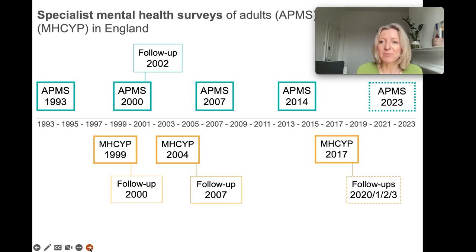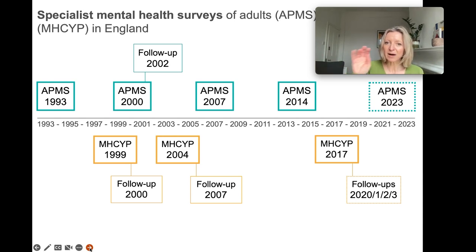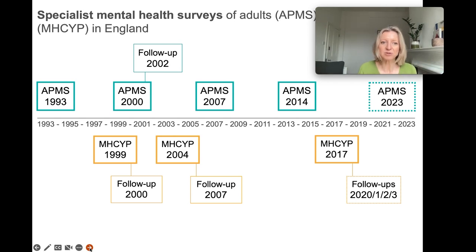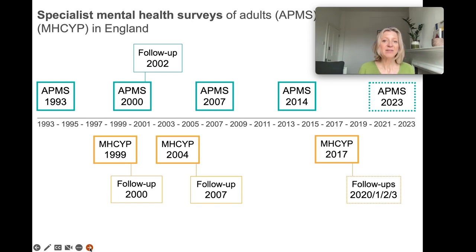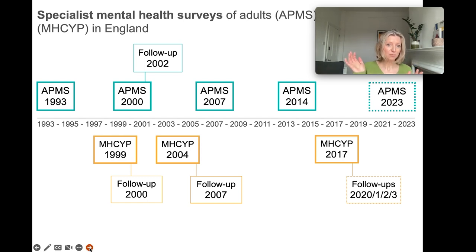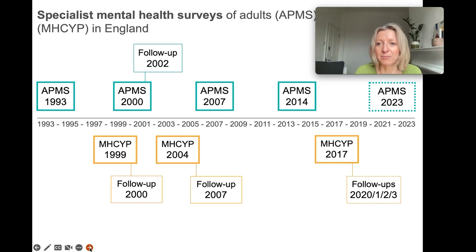This chart shows some of the different surveys that form part of the psychiatric morbidity survey series — it really should just be called the National Mental Health Surveys. The ones in green at the top refer to the adult surveys, the Adult Psychiatric Morbidity Survey (APMS), and the ones at the bottom refer to the child surveys, the Mental Health of Children and Young People Survey. These are general population surveys, including people with and without mental health problems, so we can look at prevalence and make comparisons. They are carried out in-home and span different ages — the adult surveys are from age 16 upwards, and from 2007 onwards cover the whole adult age range with no upper age limit.